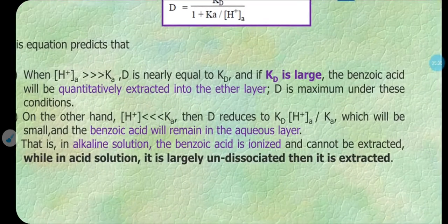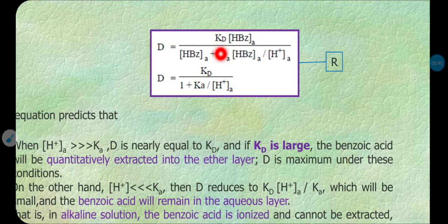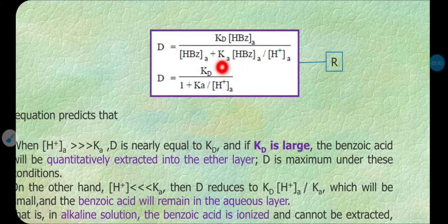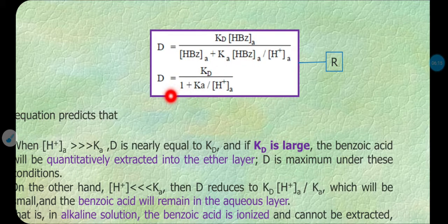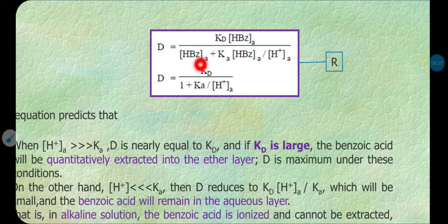We get the equation: D equals Kd times concentration of HBz (aqueous) divided by concentration of HBz (aqueous) plus Ka times concentration of benzoic acid in aqueous divided by H⁺ concentration in aqueous. Simplifying, the benzoic acid concentration in aqueous cancels out, giving the final equation: D equals Kd divided by (1 plus Ka divided by [H⁺]). This is our final relation between distribution ratio D and distribution coefficient Kd.